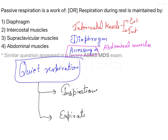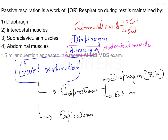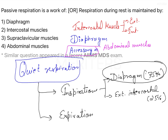During quiet respiration, you are just doing the tidal volume breathing. During normal quiet inspiration, the diaphragm is the main muscle. As stated in Ganong's, the diaphragm is the muscle that helps in quiet inspiration — contributing 75 percent of the function. The external intercostal muscle forms the remaining 25 percent. Since the question asks about quiet breathing, the maximum function comes from the diaphragm.